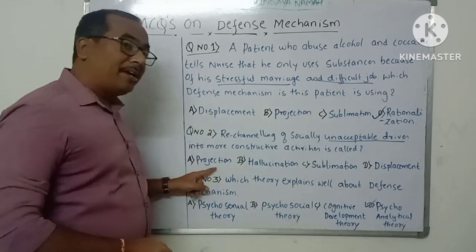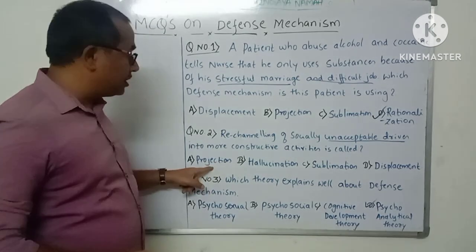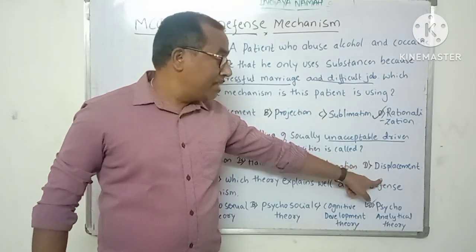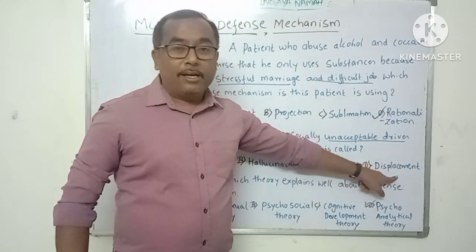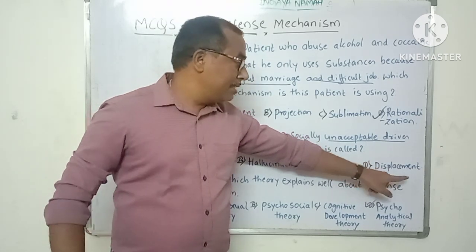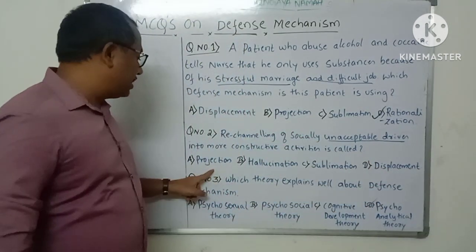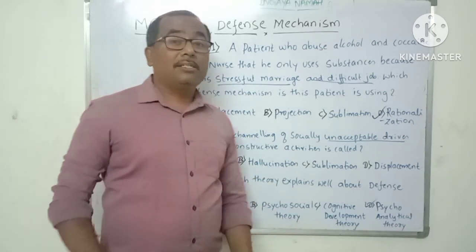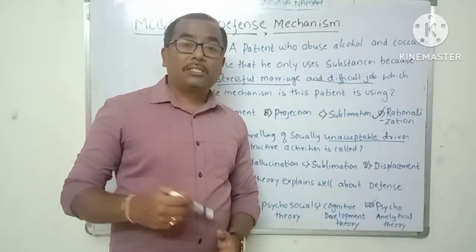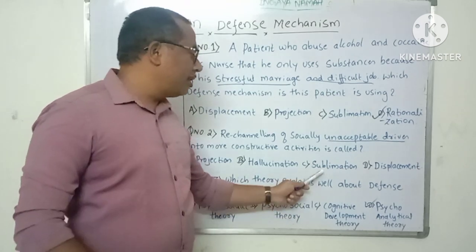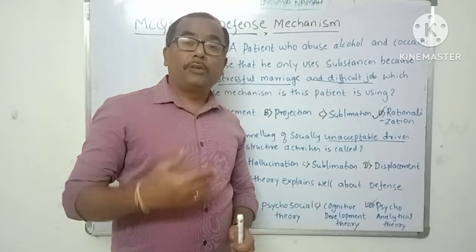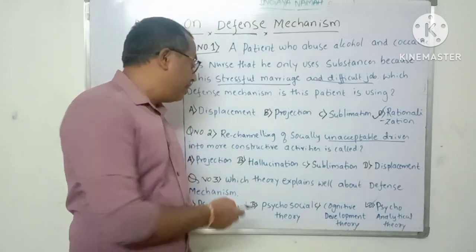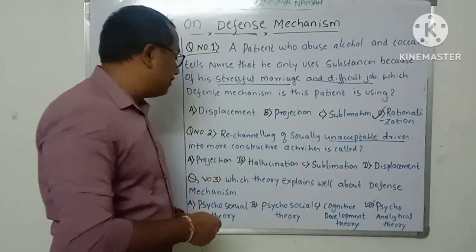Projection is destructive — the person will destroy his relationship. Displacement is also destructive, as he will displace feelings onto a weaker or less threatening person. Hallucination is not a defense mechanism; it is a false perception without an external stimulus. Sublimation is the one which is a positive defense mechanism — it is constructive, does not destroy relationships, and is a healthy defense mechanism.